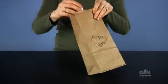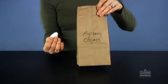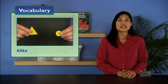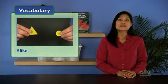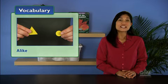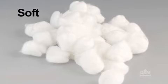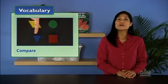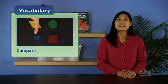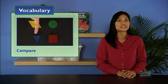After the second clue, students should hold up the cotton ball from their trays. Hold up the cotton ball from the bag so that the students can see if their match is correct. Use the word alike to describe the match, and explain that objects that are alike are the same in some way. For instance, all cotton balls are soft and white, and are therefore alike. Make sure students understand that when we compare objects, we find out how they are alike and different.